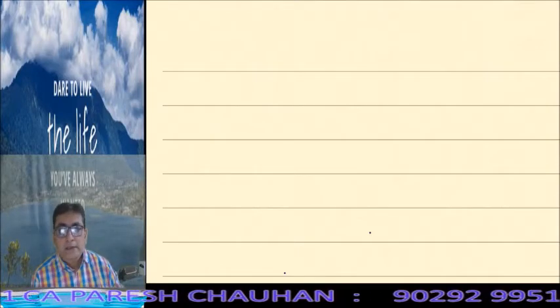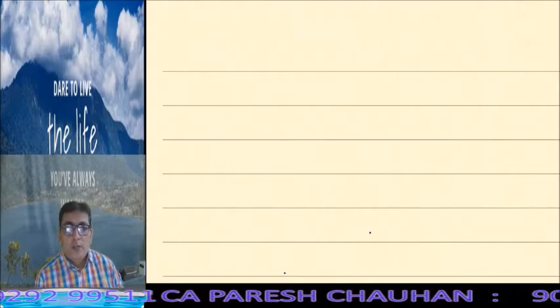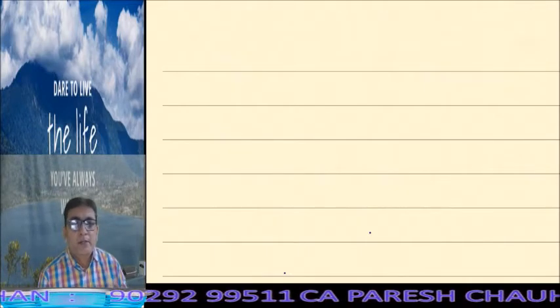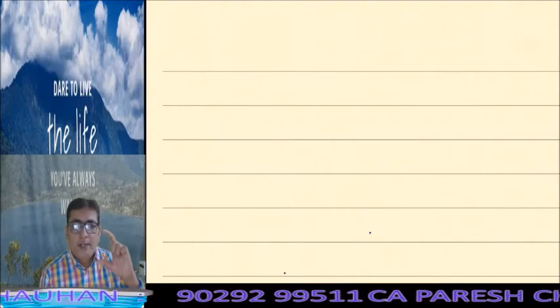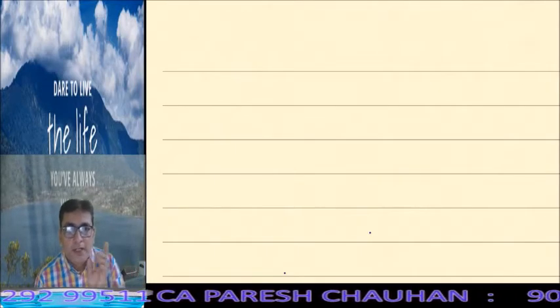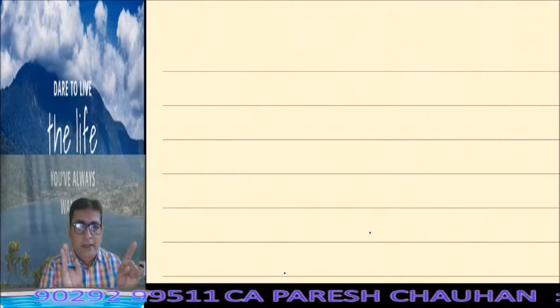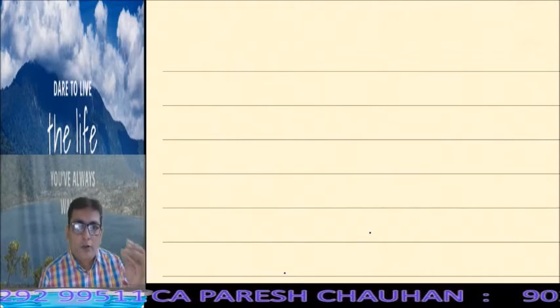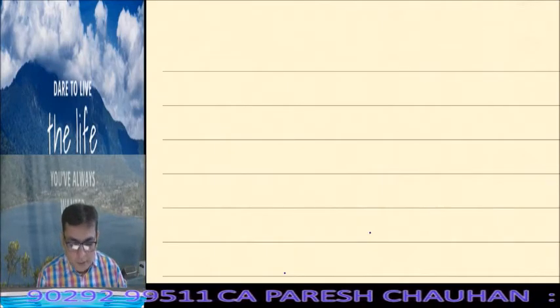Hello students, this is CA Paresh Chauhan. Today we are going to study about important concepts which come at CA Foundation as well as CA Intermediate. Our topic is Partnership Accounts — a small concept called Joint Life Policy, which comes in both retirement of a partner as well as death of a partner. We are going to study the accounting implications of a joint life policy.